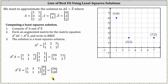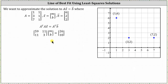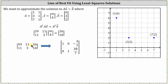Now we write the augmented matrix for the equation A-transpose A times vector x equals A-transpose times vector b and solve for m and b. The augmented matrix has first row 59, 11, 26 and second row 11, 3, 10.